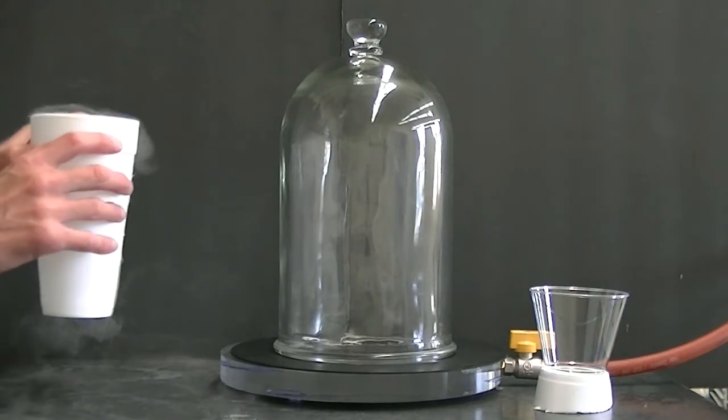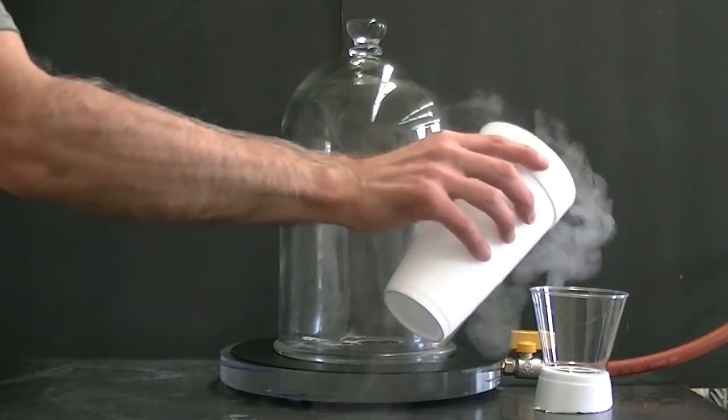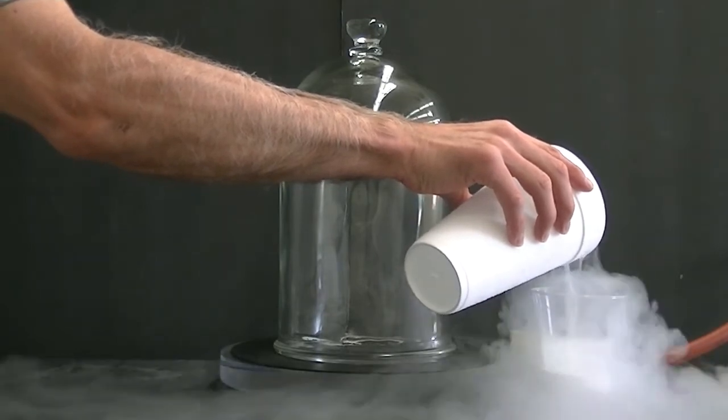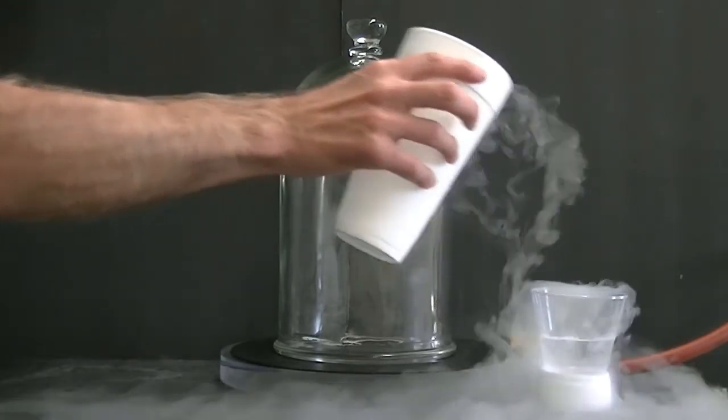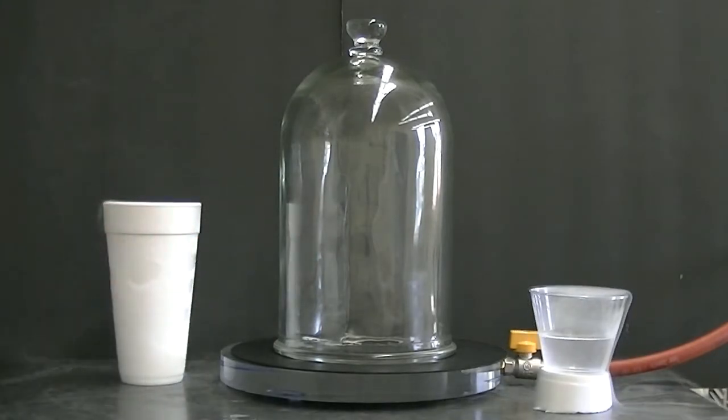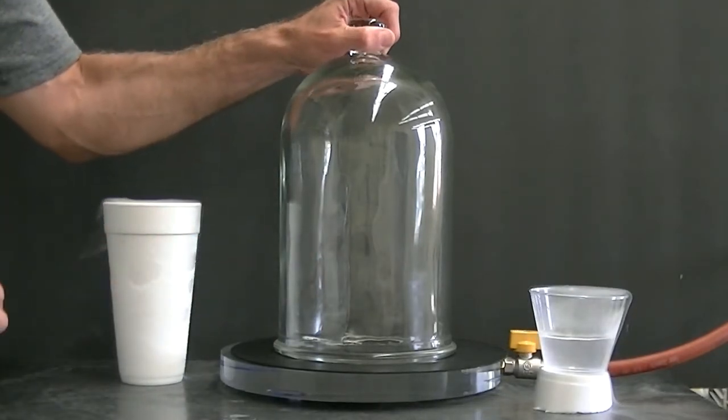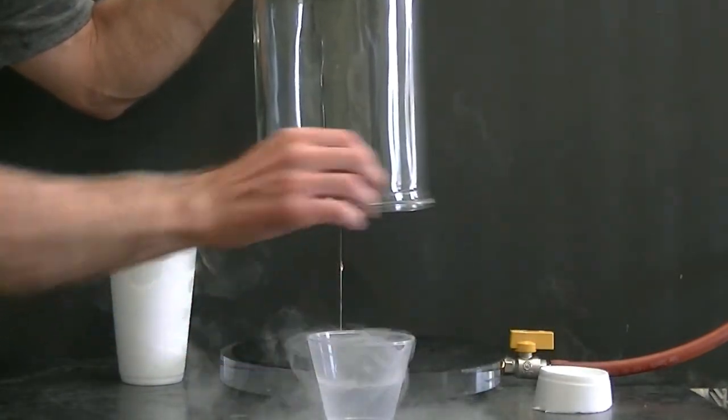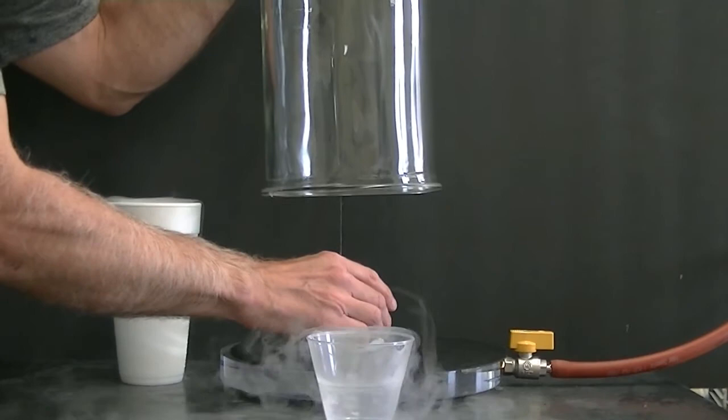I'm going to pour some of this liquid nitrogen into this cup so we can see it. Then we're going to place the cup into this bell jar and turn on the vacuum. The vacuum will pump air out of the bell jar and reduce the pressure on the liquid nitrogen. It will also cause the nitrogen to evaporate very quickly. And as the nitrogen evaporates, it'll cool.